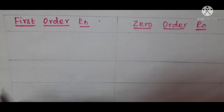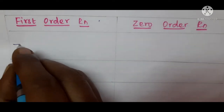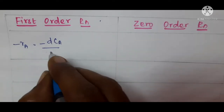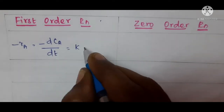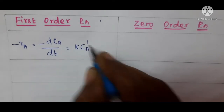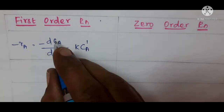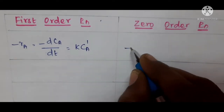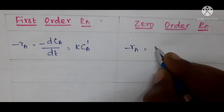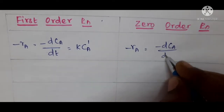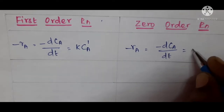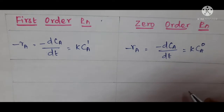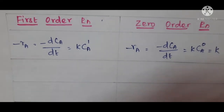For first order reaction, the rate equation is: minus Ra is equal to minus dCa divided by dt, is equal to k times Ca to the power 1. This is the differential form. For a zeroth order reaction, it is minus Ra equal to minus dCa divided by dt, equal to k times Ca to the power 0. Since any value to the power 0 equals 1, you simply get k.